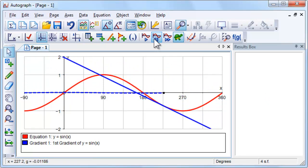Is the gradient function a surprise? Did you expect the amplitude of the cosine wave to be 1? What is the value of the gradient function at x equals 0?